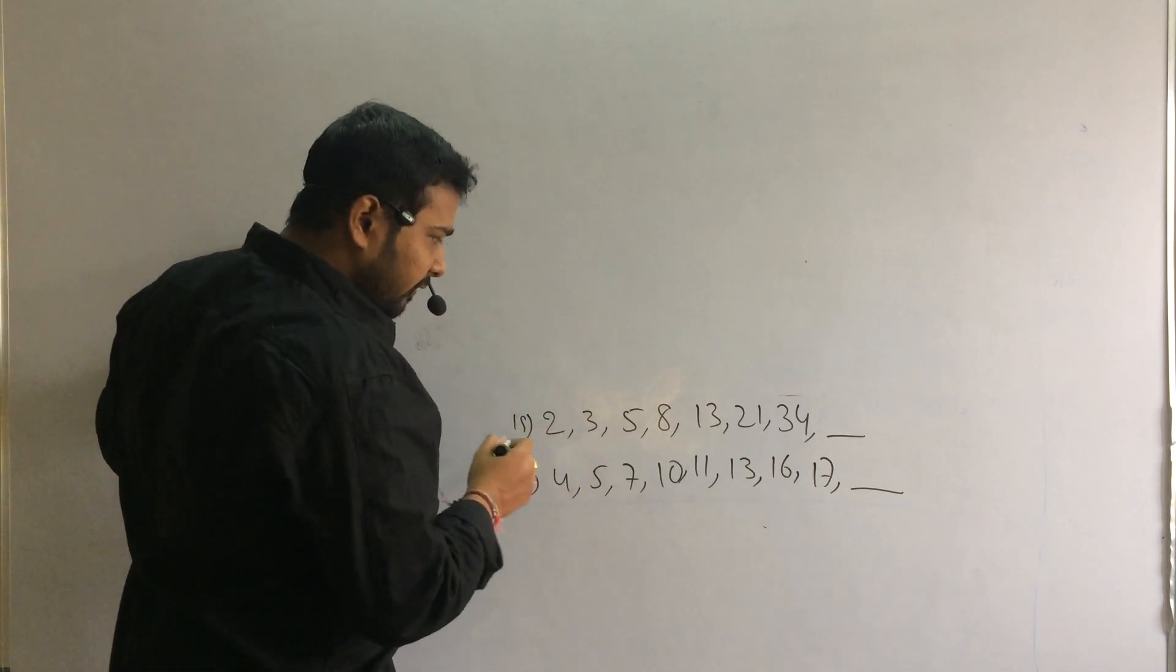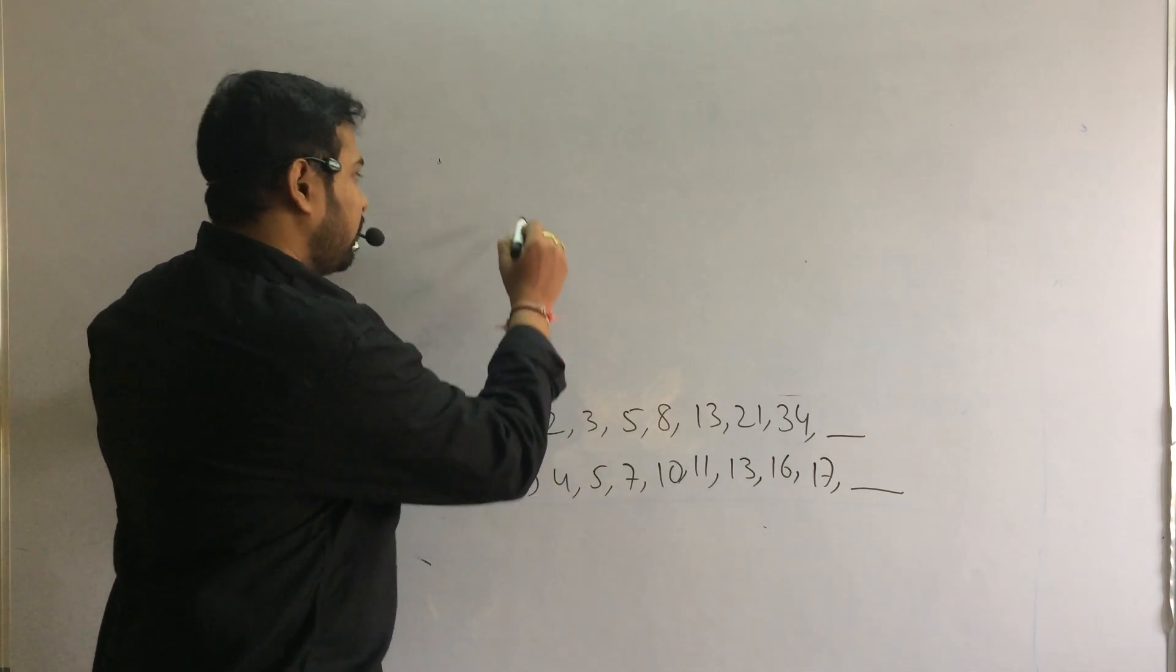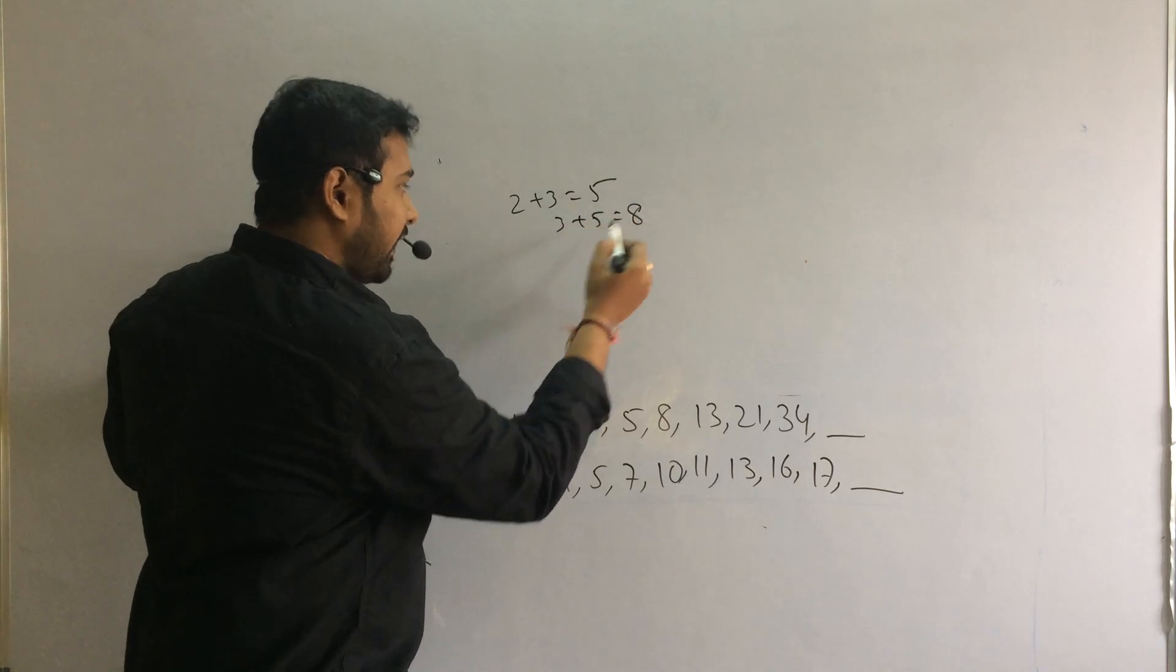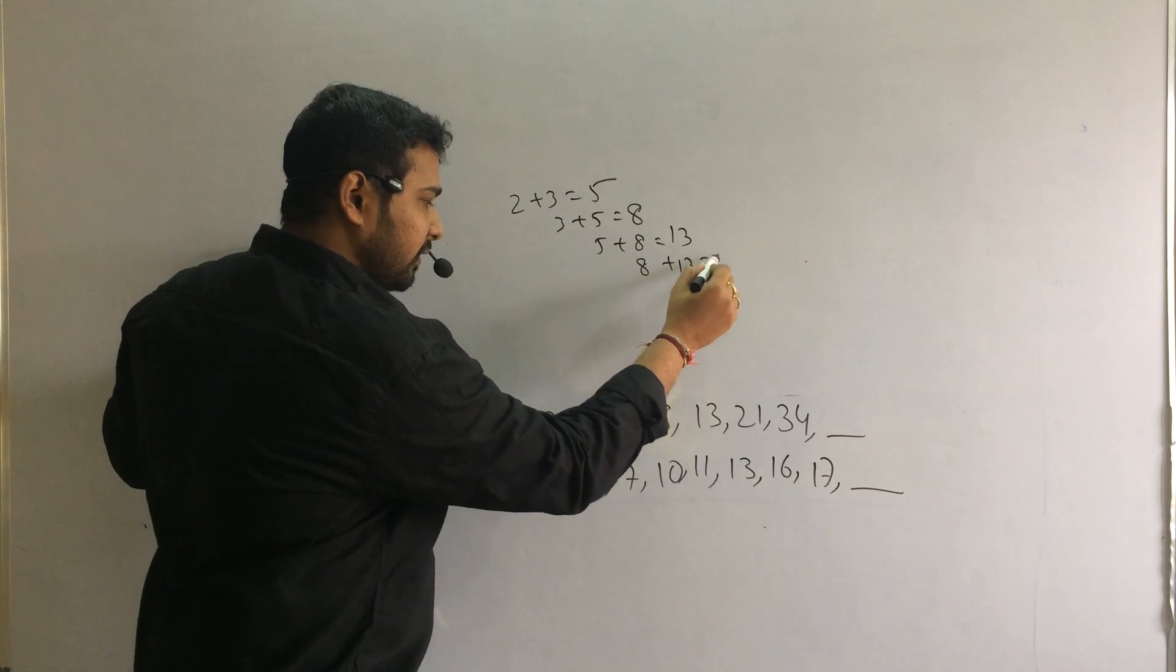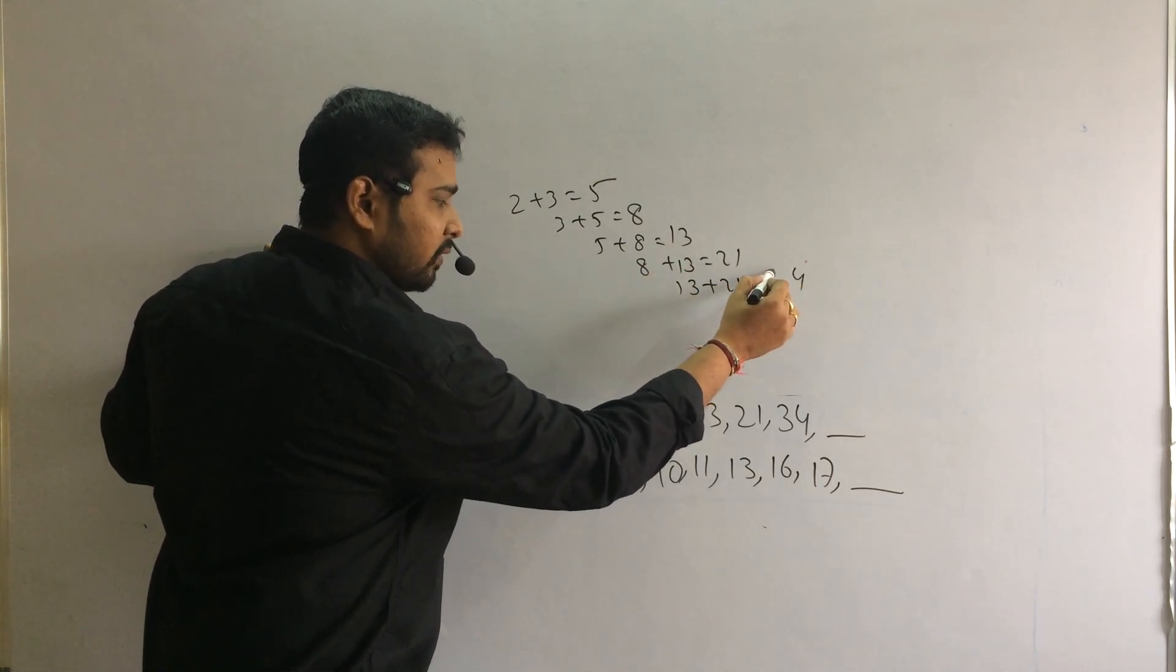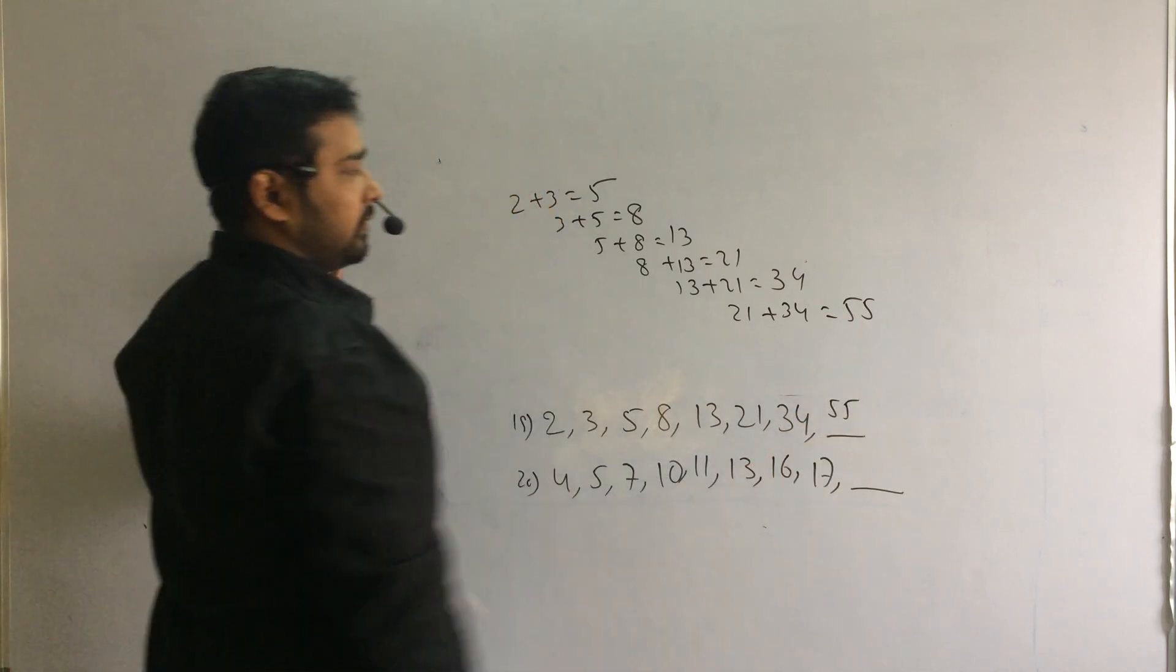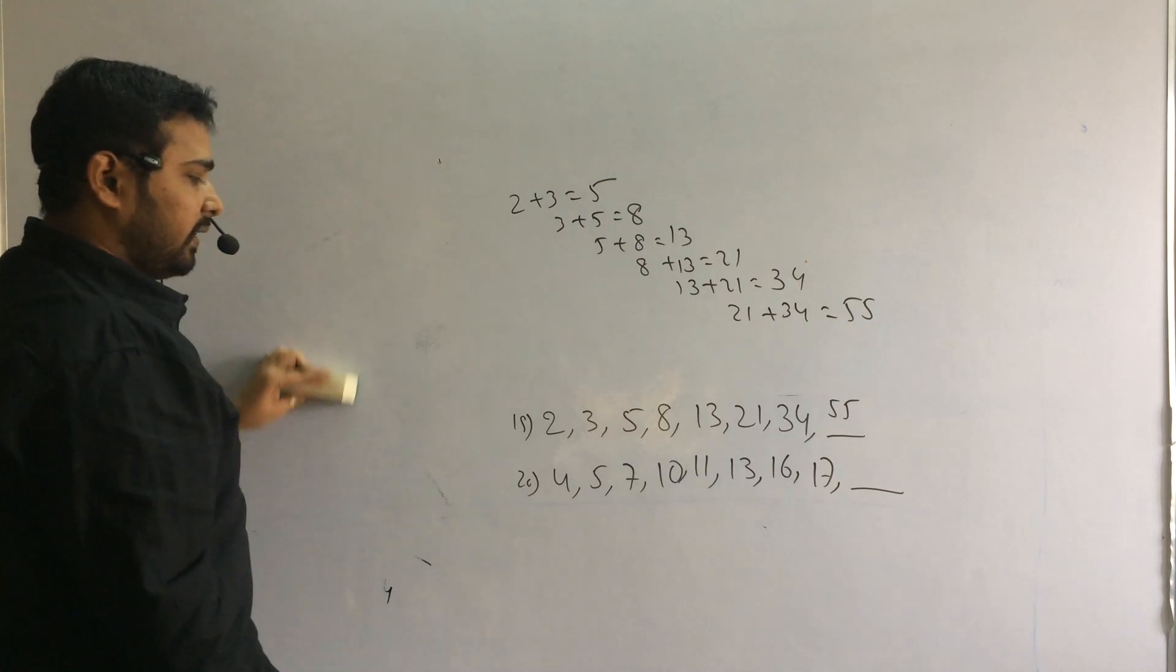Next. 2, 3, 5, 8, 13. Difference is very normal. Like previous problem, 2 plus 3, 5. 3 plus 5, 8. 5 plus 8, 13. 8 plus 13, 21. 13 plus 21, 34. So likewise, 21 plus 34, 55. That's your answer. This is also Fibonacci series.